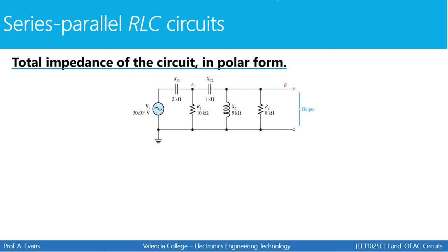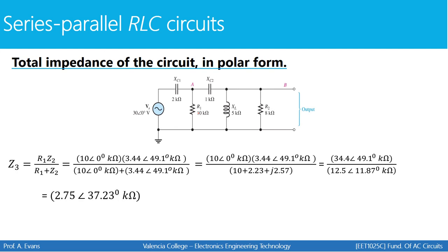Next, we take Z2 — the combination of XC2, XL, and R2 — and combine it in parallel with R1 using product over sum, giving us Z3. Z3 represents the combination of R2, XL, XC2, and R1. The product over sum setup multiplies on top and sums on the bottom. Working through that combination, Z3 comes out to 2.75 kilohms at an angle of 37.23 degrees.